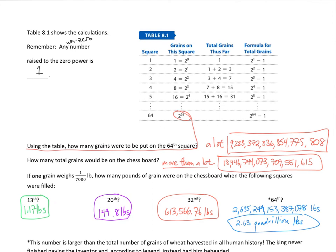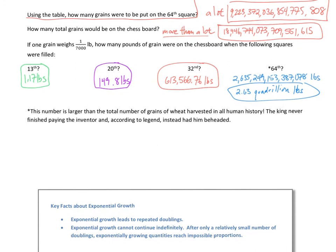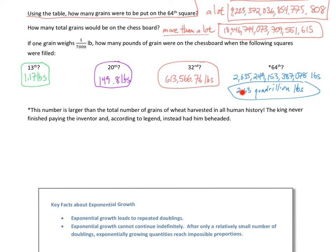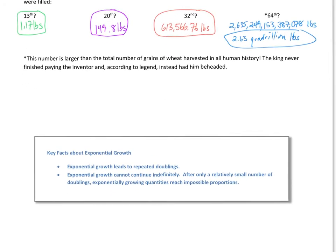In fact, this number over here is larger than the total number of grains of wheat harvested in all of human history. The king never finished paying the inventor and according to legend, just instead had the inventor beheaded. It's just easier to deal with your problems if you kill them.